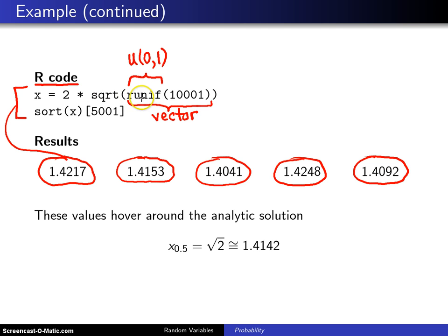Notice that each time you get a fresh set of uniform 0, 1s, and because you get a fresh set of uniform 0, 1s, you're going to get a fresh set of x's, which means you will get a different median each time.